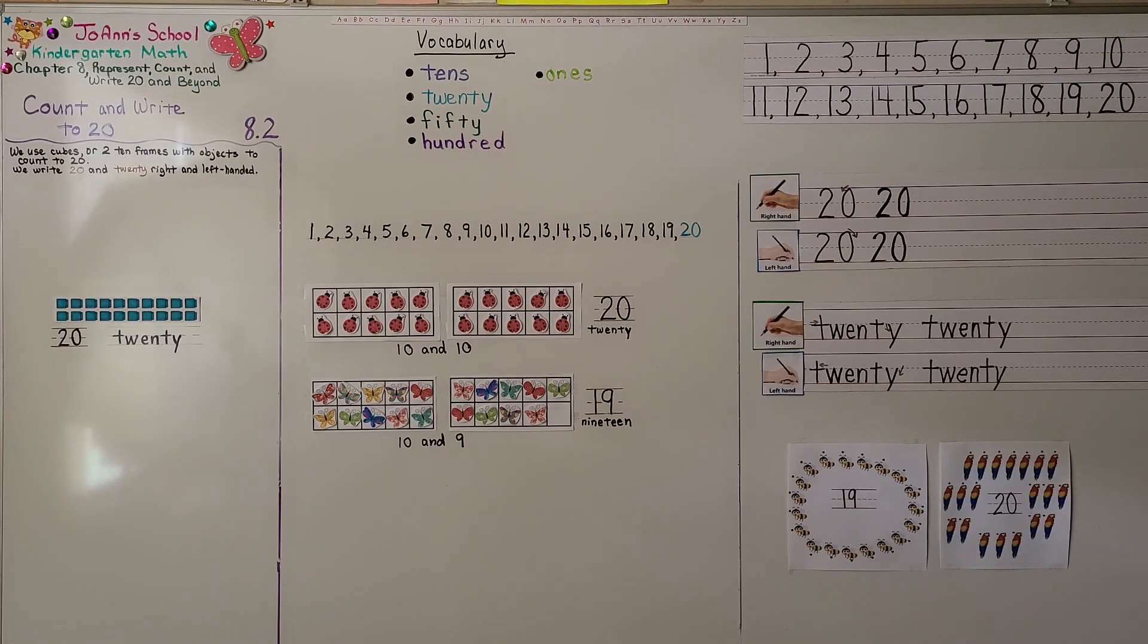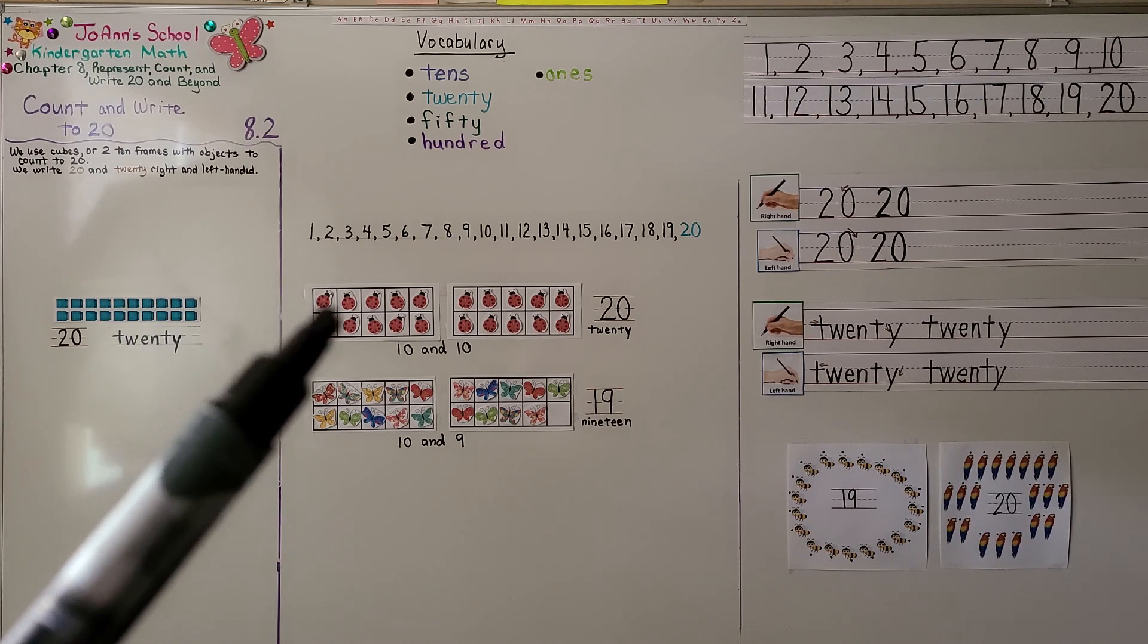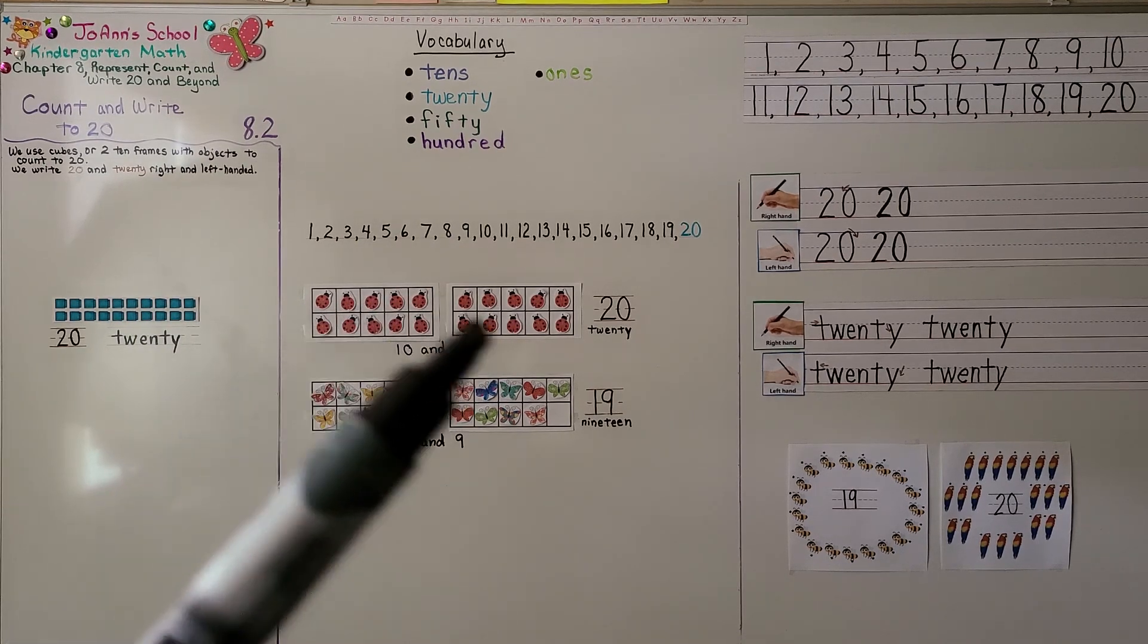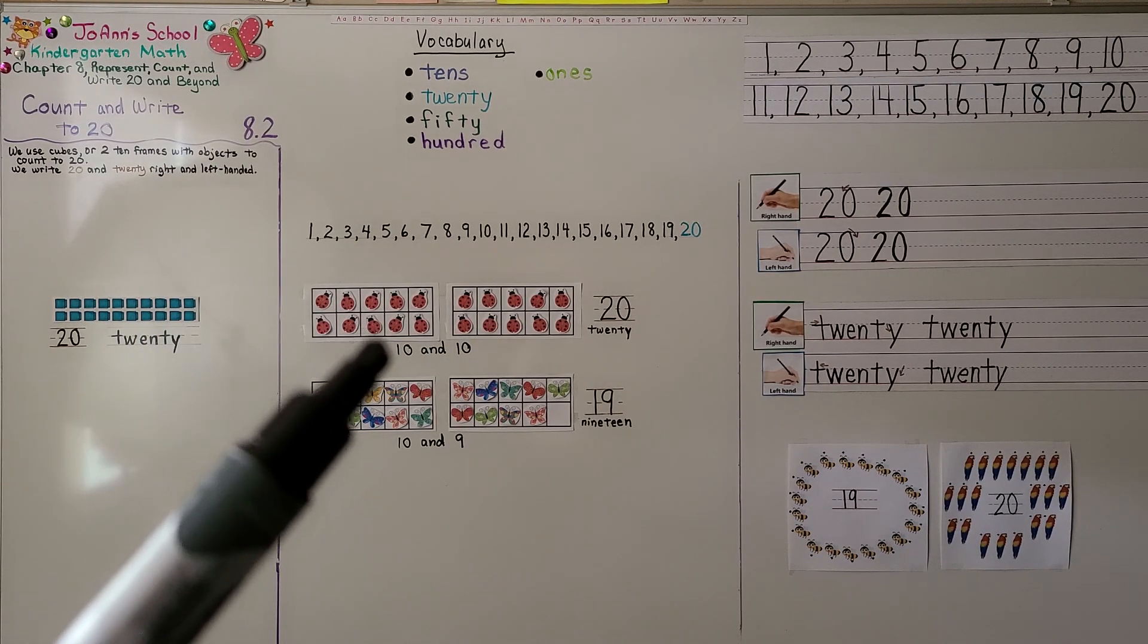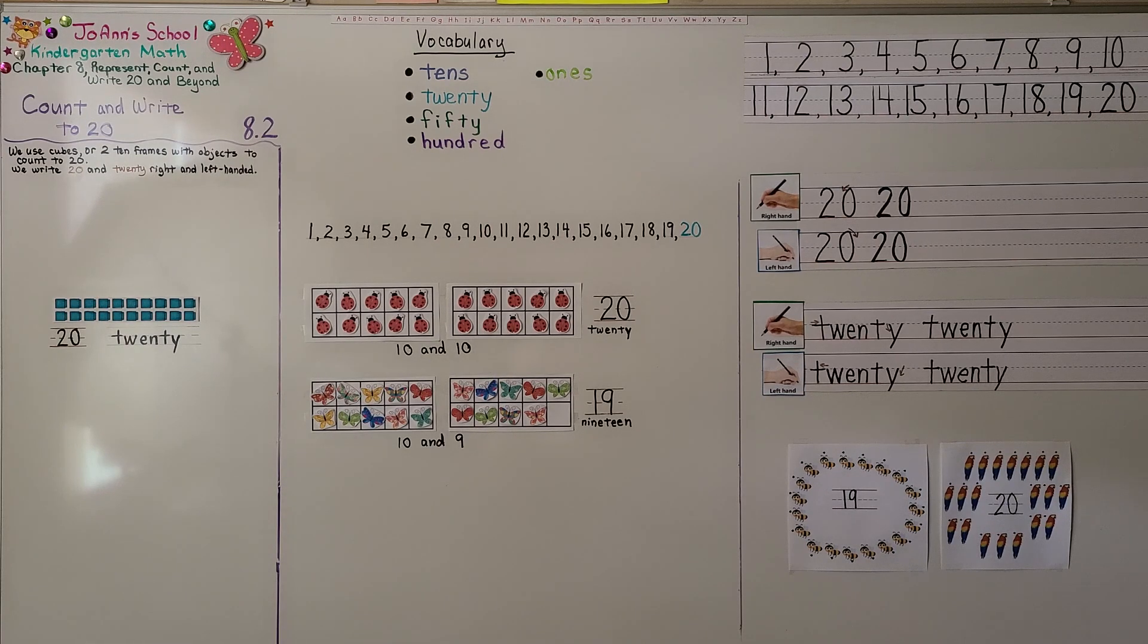So we can show 20 as two 10 trains, two 10 frames that are full, 10 and 10 more. In our next lesson, 8.3, we're going to count and order to 20. I hope you have a wonderful day and I hope you'll join me next time. Remember to hit the like button. Bye.